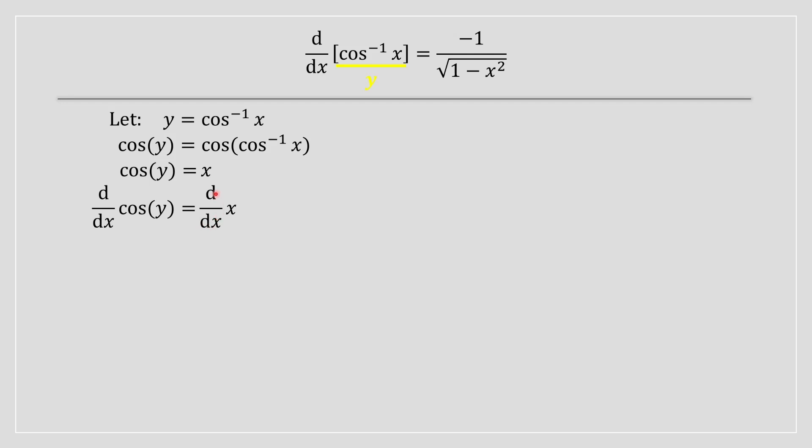Afterwards we're going to take a derivative on both sides of this equation. So the right hand side, that's just going to be equal to 1. It's a pretty standard derivative. And on the left hand side, we got the derivative with respect to x of cos of y.